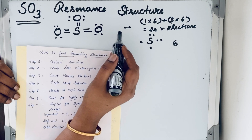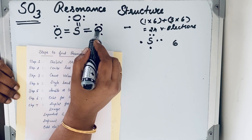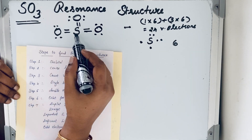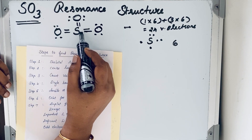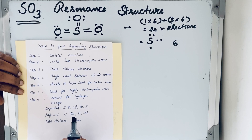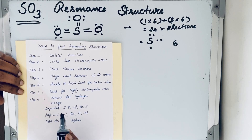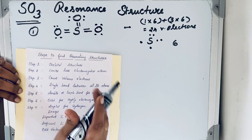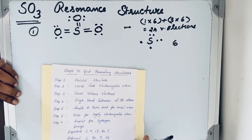This is the first resonating structure for SO3. Sulfur has more than an octet here, but that is acceptable because sulfur, phosphorus, chlorine, bromine, and iodine are expanded octet elements — they can have eight or more than eight electrons.